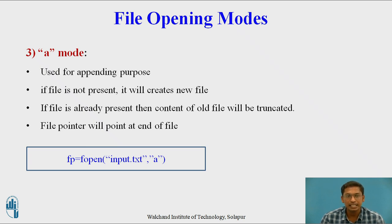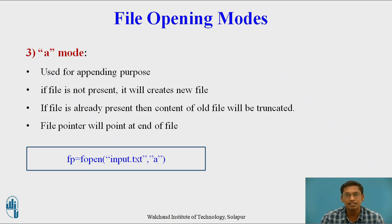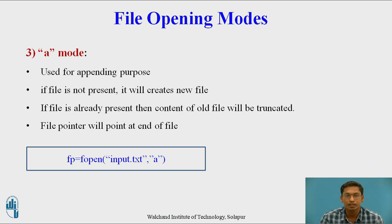The third file opening mode is a mode, or append mode. It is used for appending purpose. If the file is not present, it will create a new file. If the file is already present, the content of the old file will not be deleted, and the file pointer will point at the end of the file. a mode is used for appending new content at the end of the file. Example: fp = fopen("input.txt", "a"), where a is passed as the second argument to fopen.